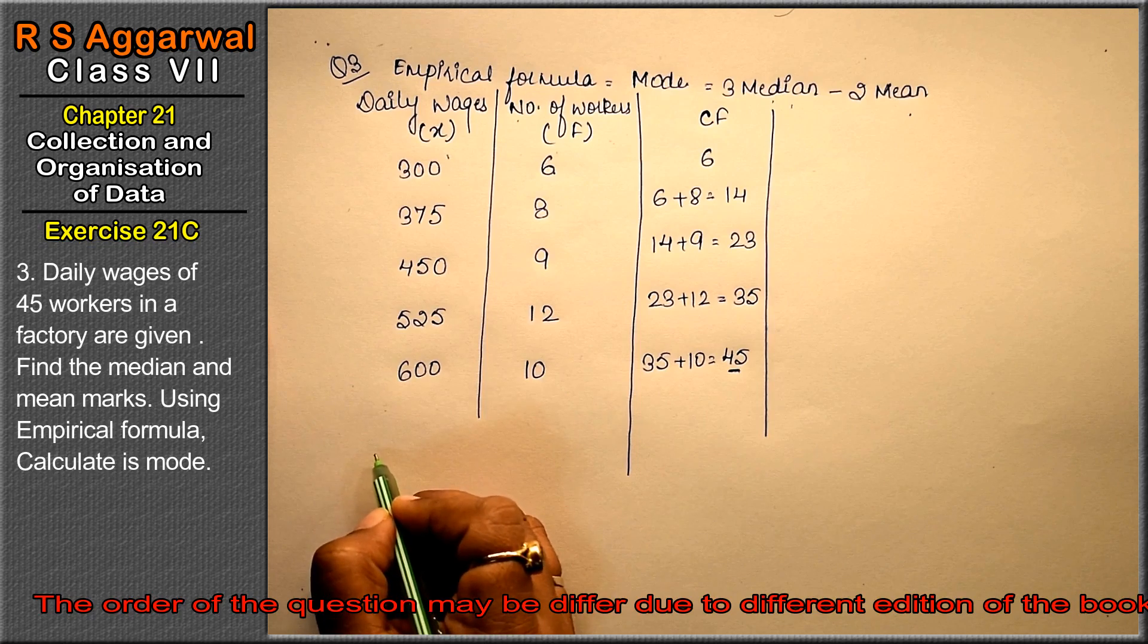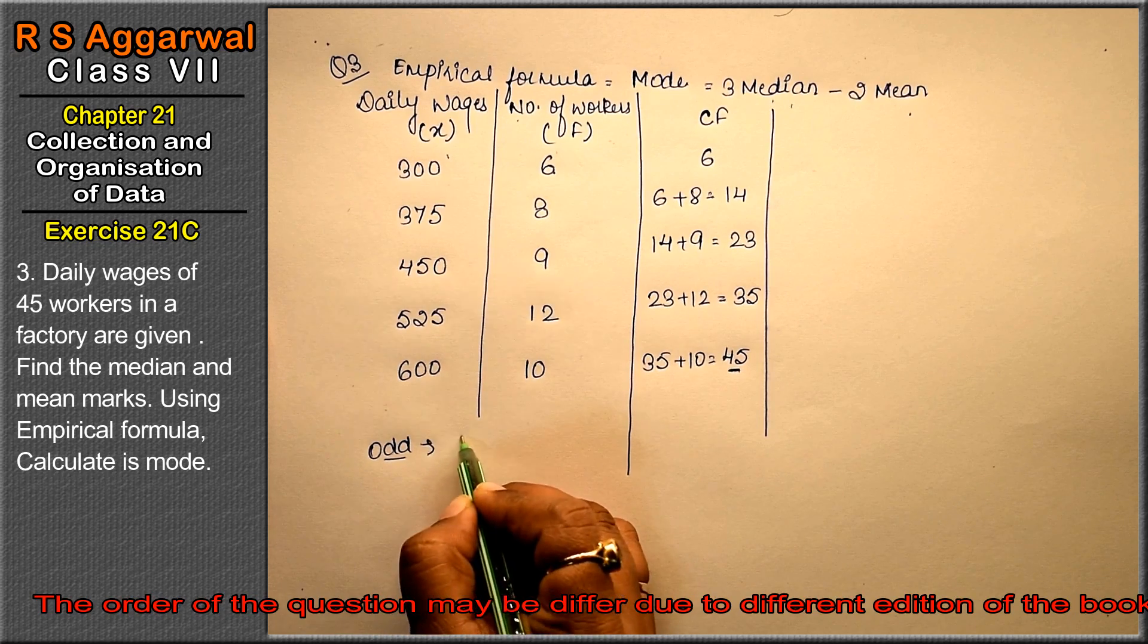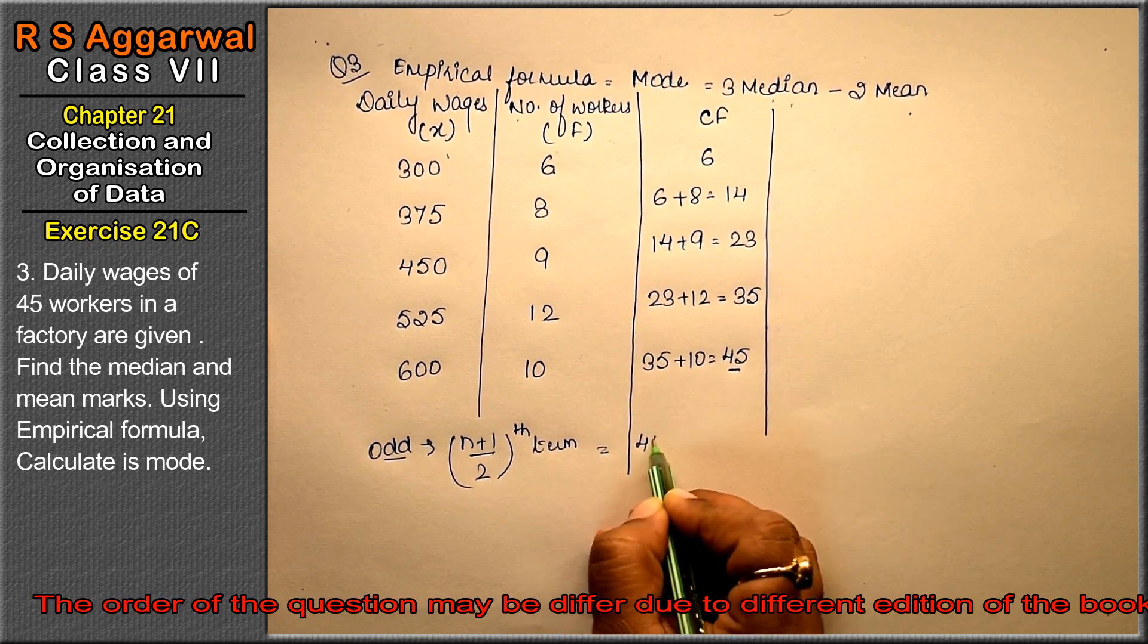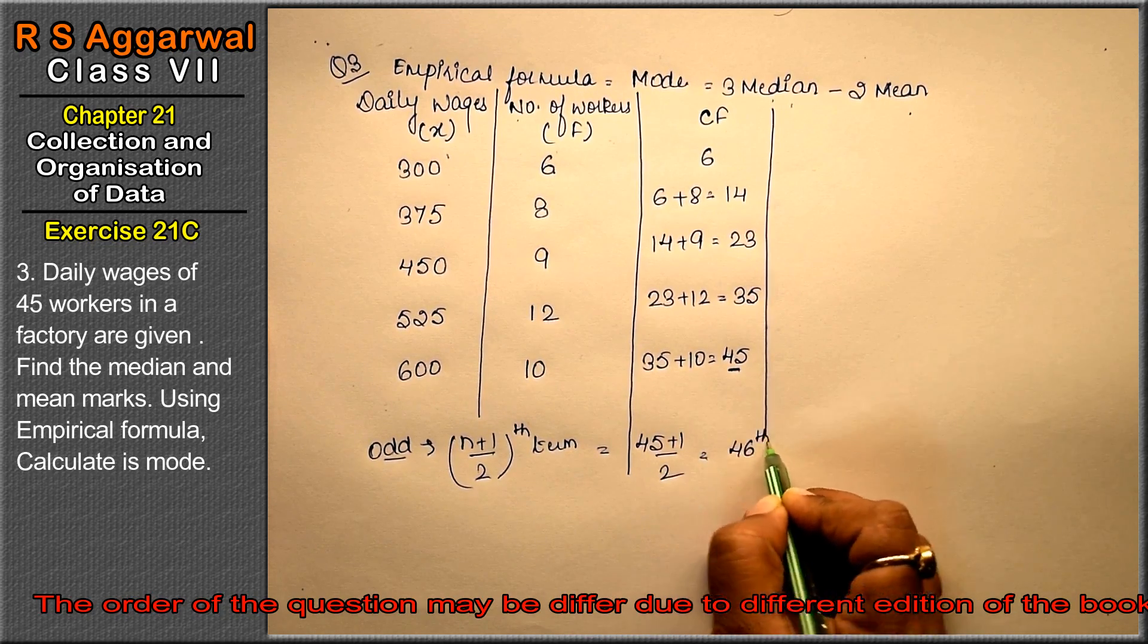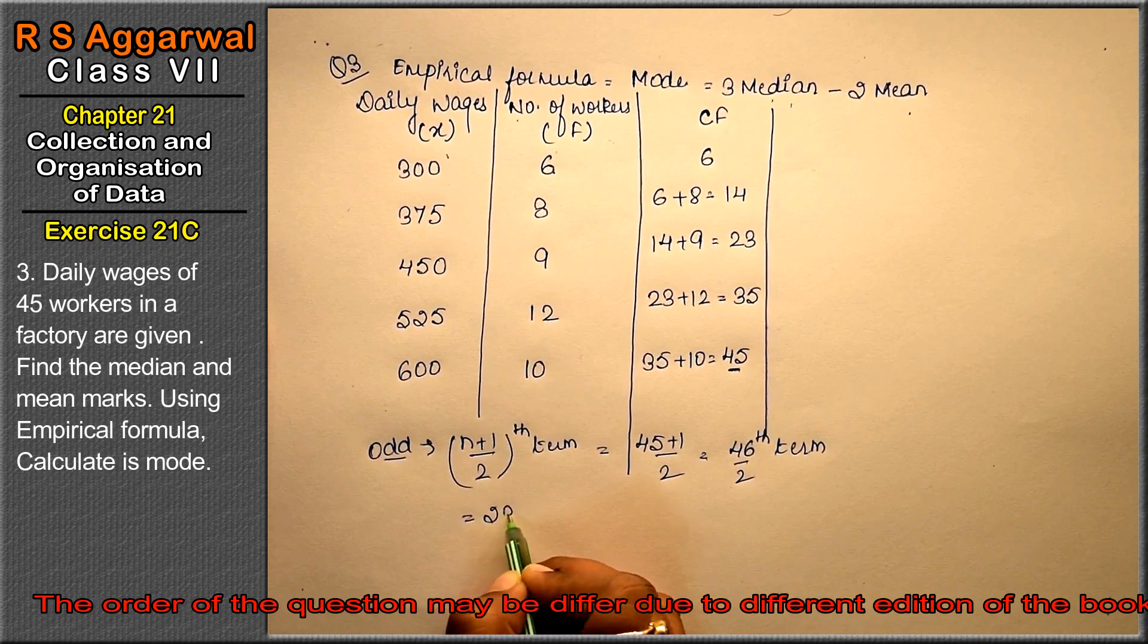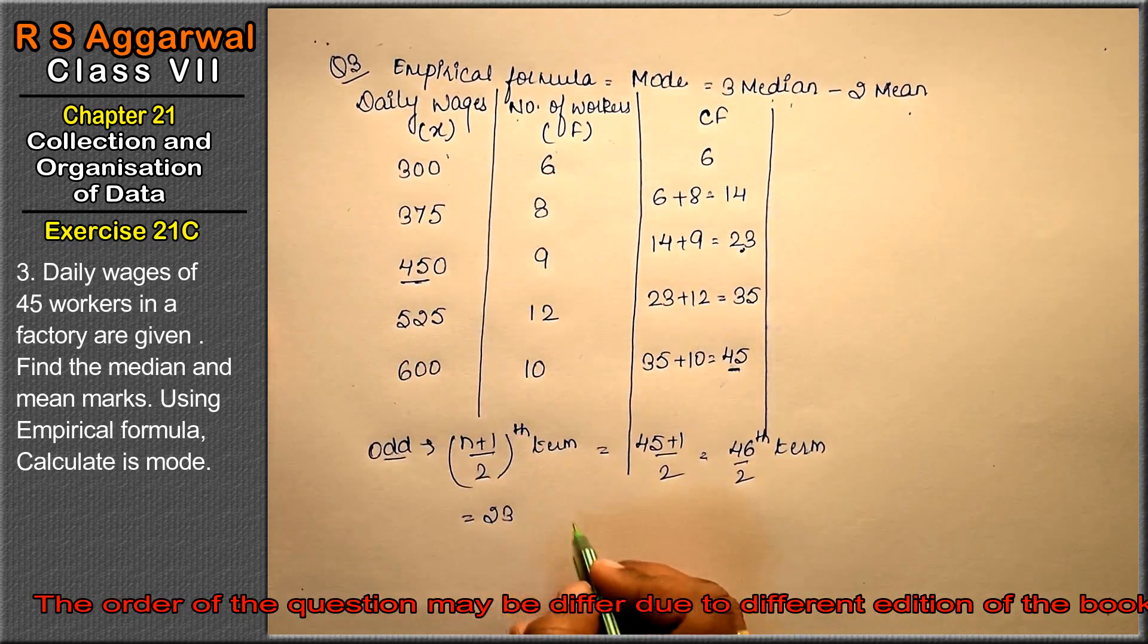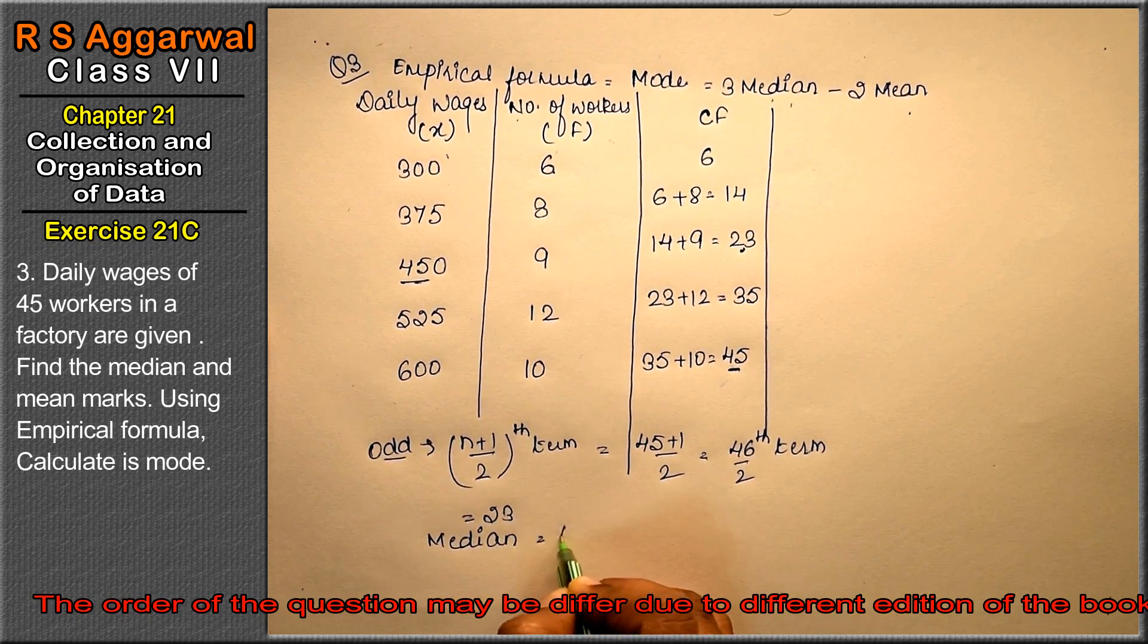This is our n, so n is 45, that means odd. In odd case, it's n plus 1 upon 2th term. So how much is it? 45 plus 1 upon 2, that is 46 upon 2, that is 23rd term. There is 23 here, 1, 2, 3, that is 450. So our median equals 450.